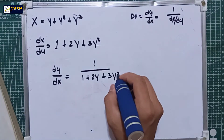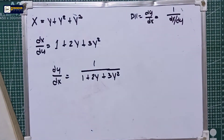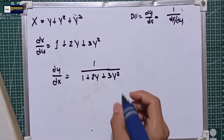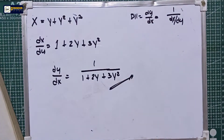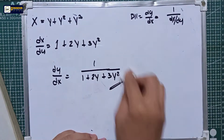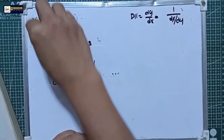So dy over dx is equal to 1 over (1 plus 2y plus 3y squared). This is the final answer for number one. Let's try number two.